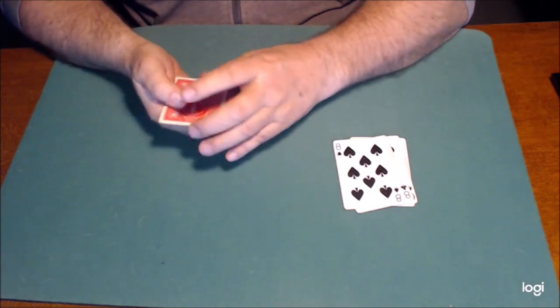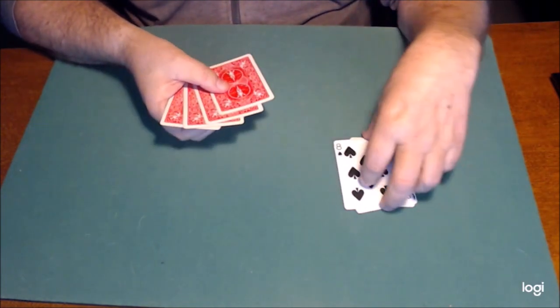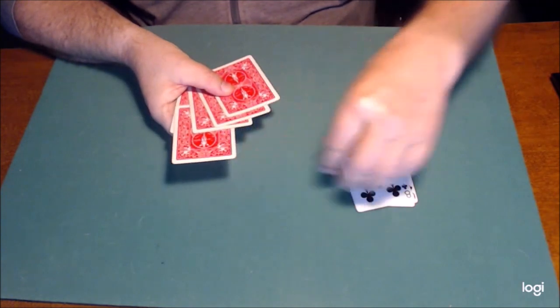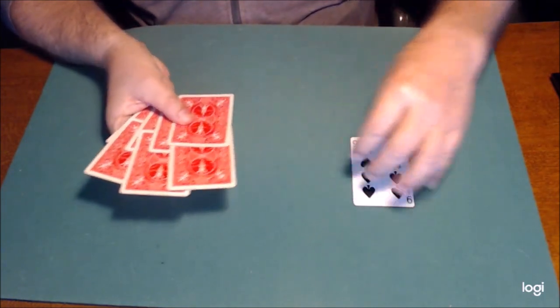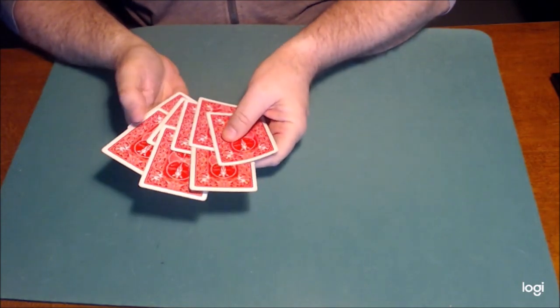So I think what we're going to try and do is mix them a little more thoroughly and then we'll interlace them. So we'll put one of the black cards here. Next one in there between those reds. Third one in between those reds. And the last black one on top.